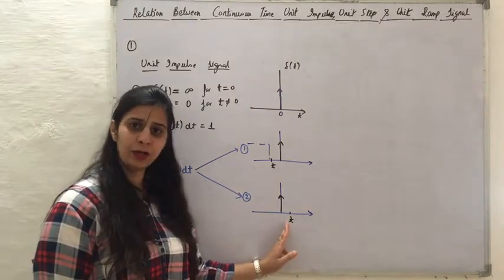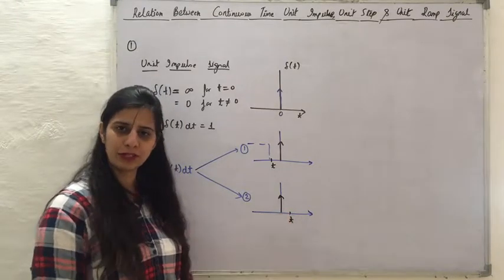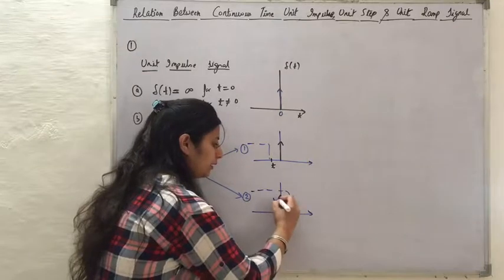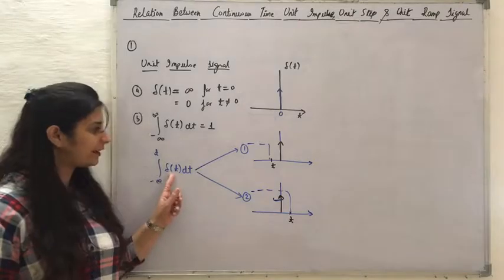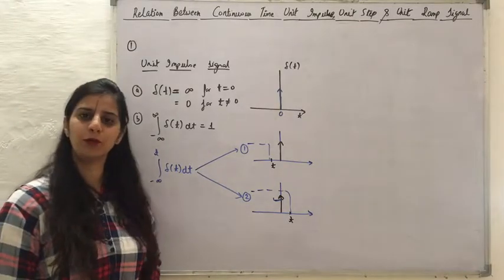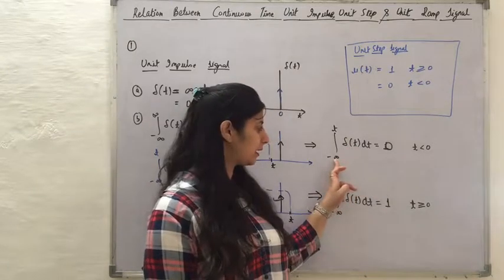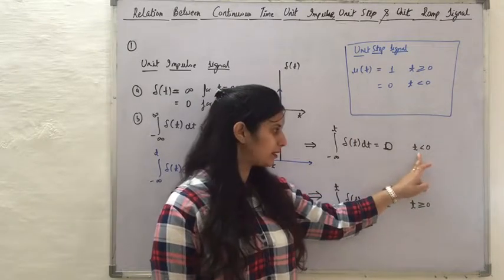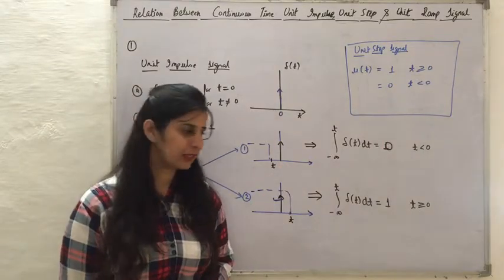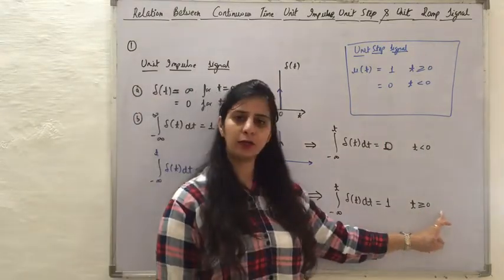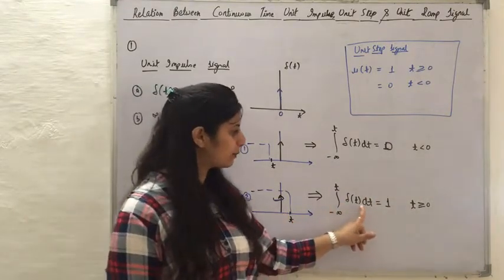In the second case, t is lying to the right of the t equal to 0 axis, which means the integration includes the unit impulse signal. When it includes the unit impulse signal, the integration result will be equal to 1. So, integrating δ(t) dt from minus infinity to t gives 0 when t is less than 0, and 1 when t is greater than 0.